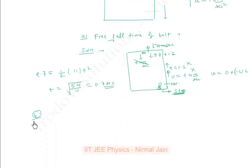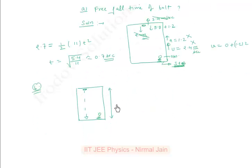In reference frame of elevator, let's say some observer is present here, and the bolt starts falling from this point and will obviously finally reach at this point. So the final displacement will be only 2.7 meters. So with respect to this elevator, this displacement will be 2.7 meters.